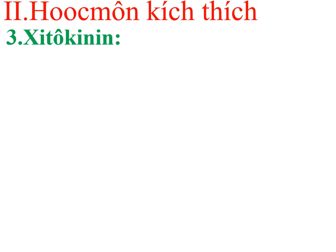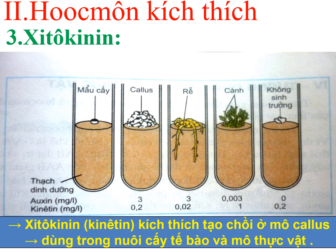Quan sát hình ảnh về vai trò của cytokinin trong nuôi cấy mô. Cụ thể là ở ống nghiệm thứ 4 từ trái sang phải: khi hàm lượng cytokinin cao thì sẽ kích thích mô callus tạo cành và tạo chồi. Điều đó chứng tỏ cytokinin được sử dụng trong nuôi cấy mô để kích thích mô thực vật tạo chồi.